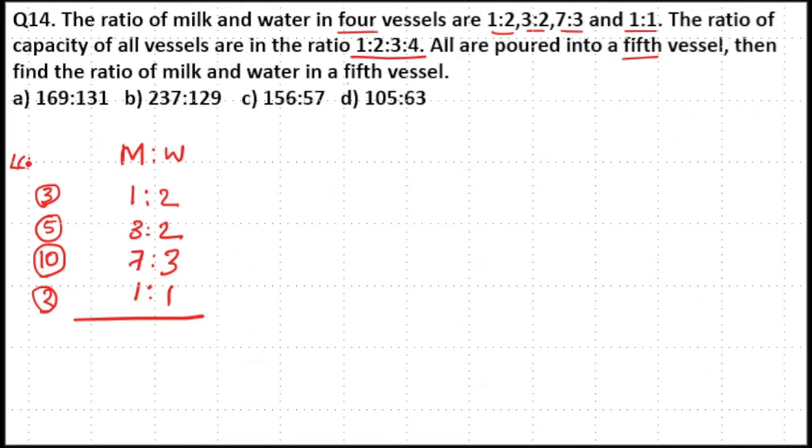Then the LCM here is of 3, 5, 10, 2, which is 30. LCM is 30. So 3 times 10 equals 30, so multiply first with 10. 5 times 6 equals 30, so multiply second with 6.